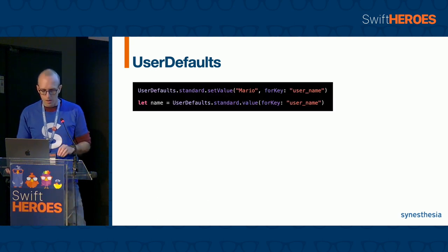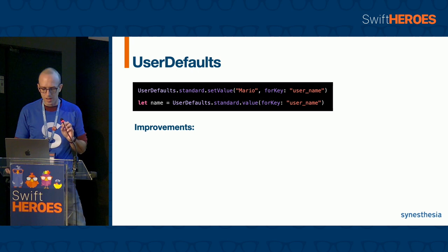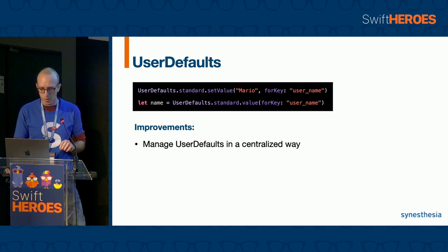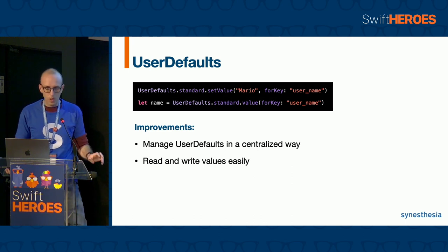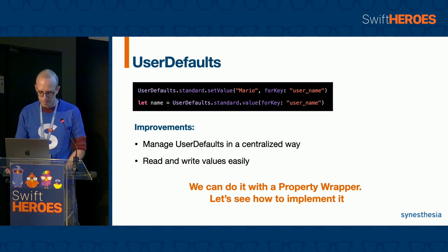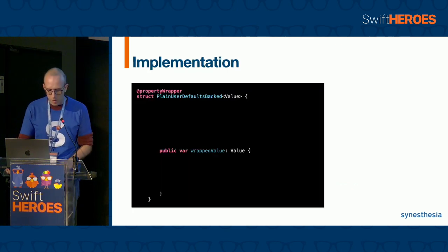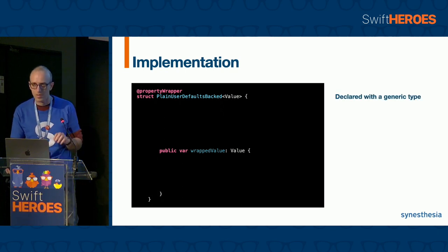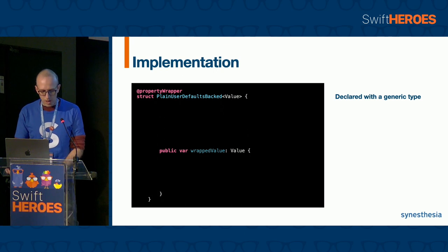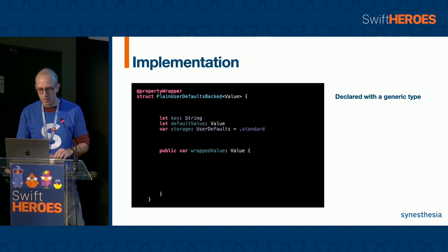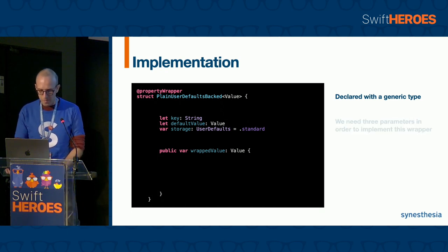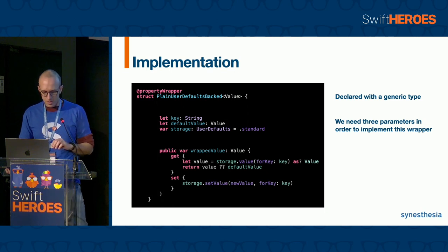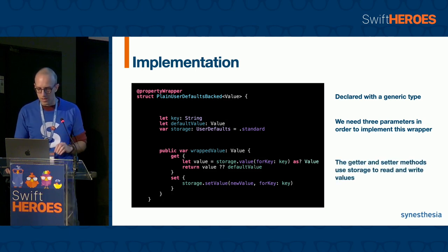A situation you have probably come across is saving values in UserDefaults. We want to find an approach that allows us to manage the data saving in a centralized way and read and write the value easily. We can do it with a property wrapper. First, we can declare a wrapper with a generic type in order to save different types of values. Then we need to add three parameters: the key, a default value, and the storage. In the setter method of the wrappedValue, we can store the values for the given key. In the getter method, we can read the value from storage and return it, or the default value if it is nil.